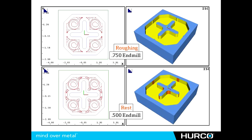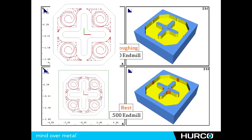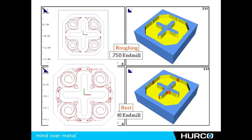Here we see an example of rest machining being used. In the top picture, you can take a look at the tool path used with a three-quarter inch end mill for roughing. At all of the 90-degree positions, there is a little piece of material where the tool could not pass between the features, so it leaves that extra bit of material. In the bottom picture, after employing the rest machining pass using a smaller end mill, you can see it goes in and only picks up that material — shown in orange — that the larger tool couldn't get.